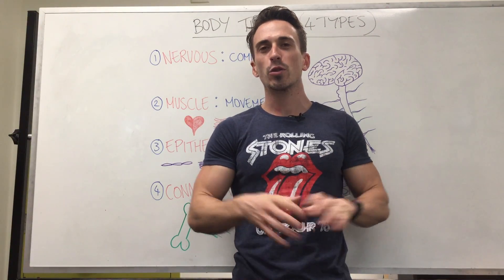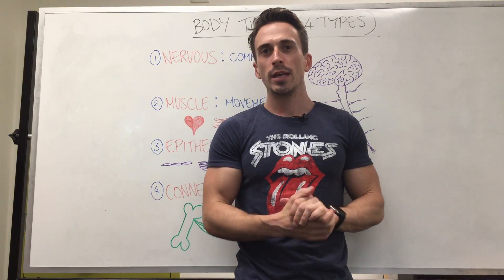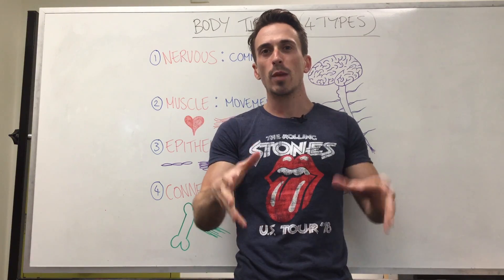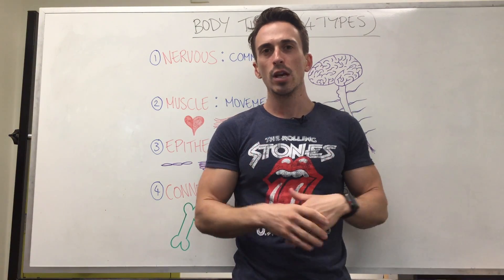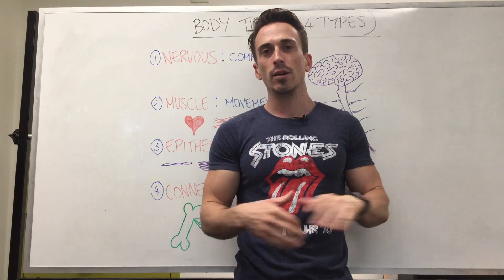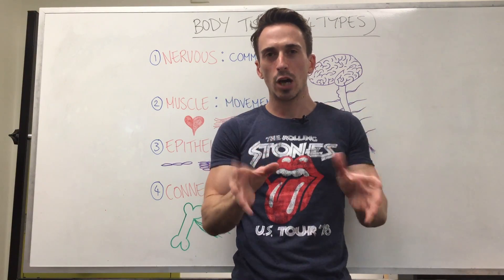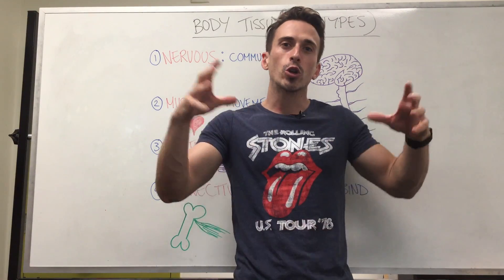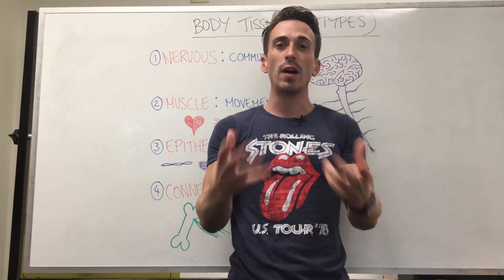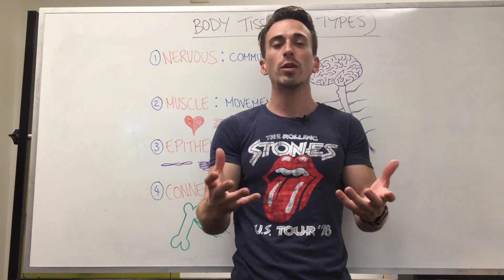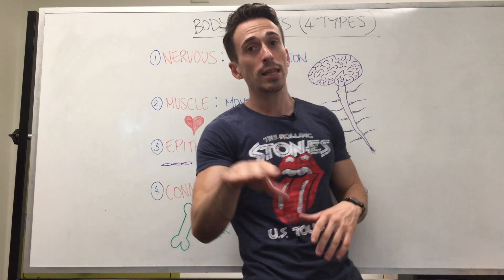Hi everyone, Dr. Mike here. Let's talk about the four tissues of the body. Your body is made up of 30 trillion cells. Of these cells, there are around about 200 individual cell types. If you were to group these cells in accordance with their function, what you get are the four tissues of the body.